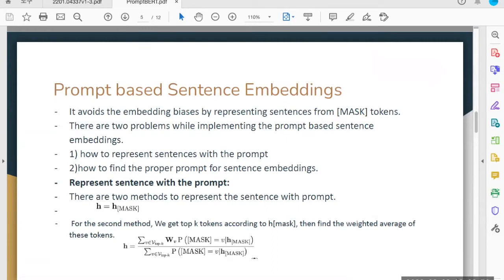Here is one method to use the hidden vector of mask token as sentence embedding: h equals h of mask. But for the second method, we get the top K tokens then find the weighted average of these tokens. The second method is actually more conventional than the first method, but there are few disadvantages.